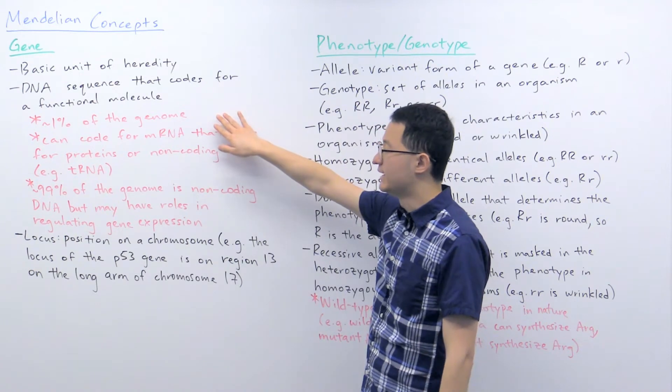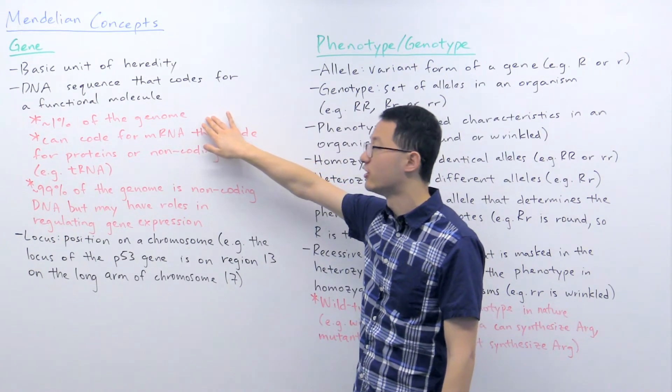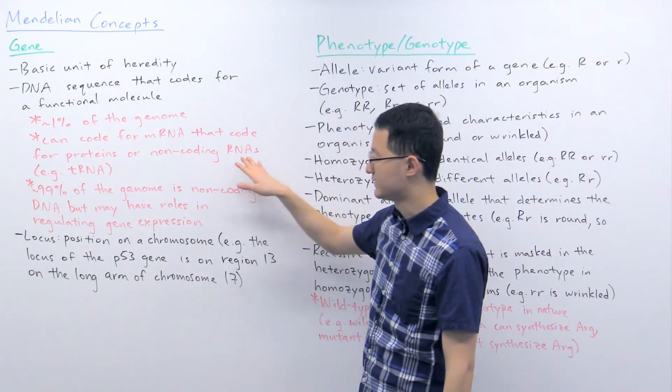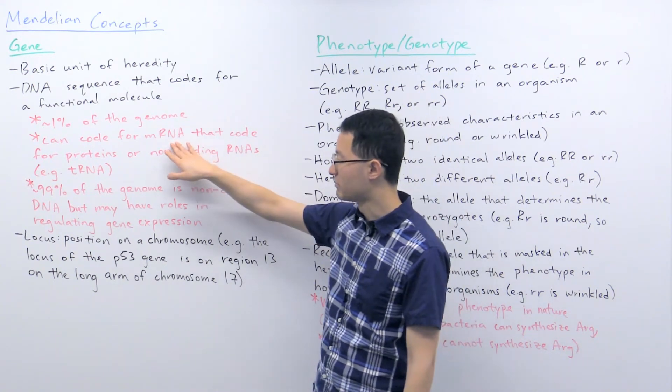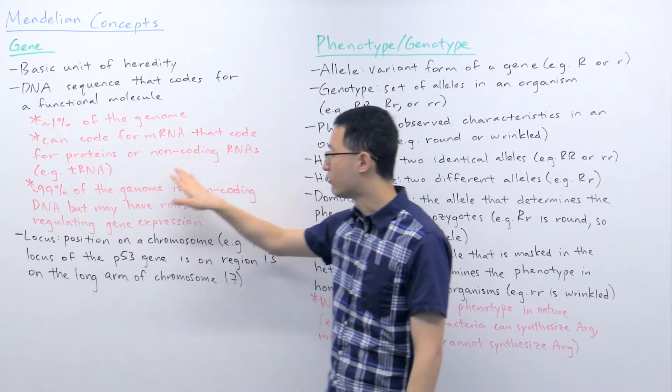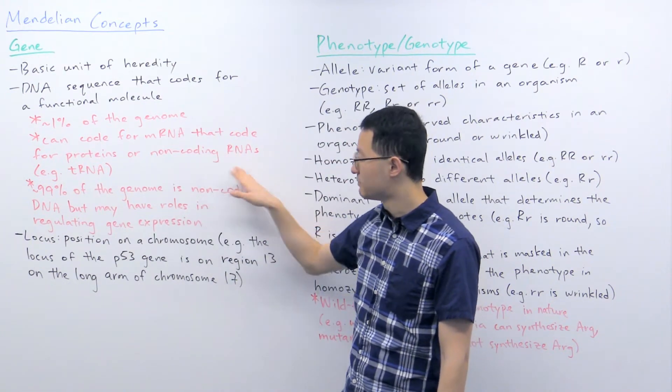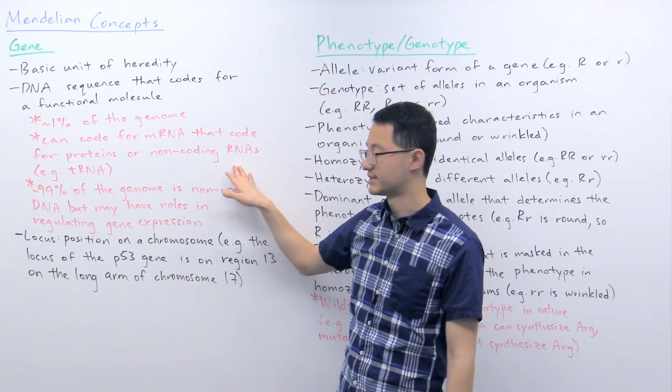This can include proteins or RNA molecules. Within the genome, genes represent a really small percentage of the DNA, only about 1% in most organisms. These DNA sequences and genes can code for mRNA molecules that will code for proteins or non-coding RNAs that do not code for proteins. But these non-coding RNAs still have important functions in cells.